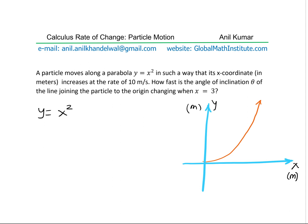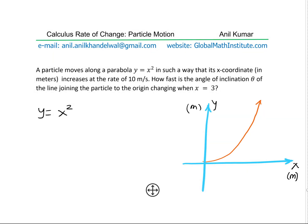We are given here that the value of x coordinate is increasing at the rate of 10 meters per second. That means we are given that dx/dt, rate of change of x with respect to time, is 10 meters per second.